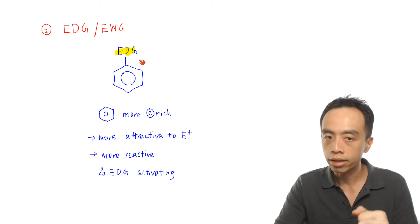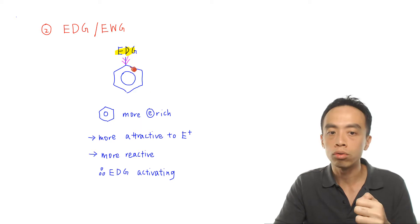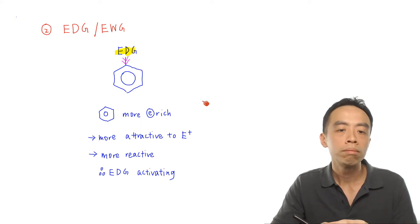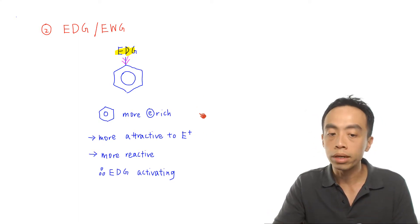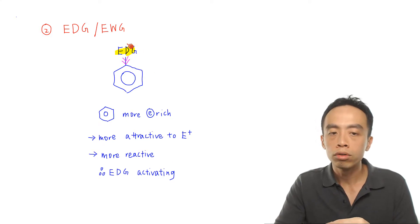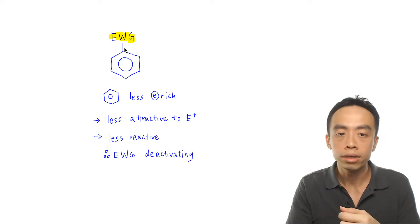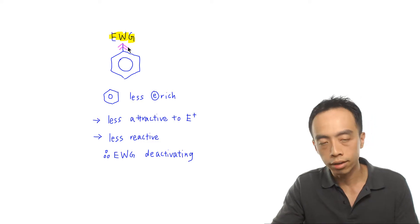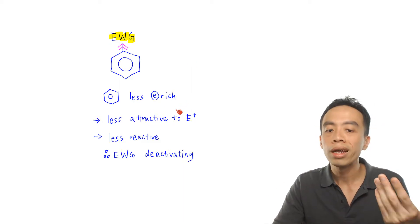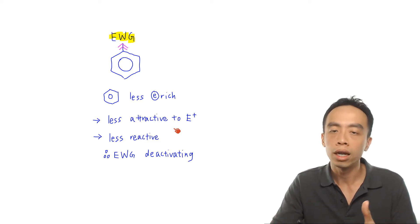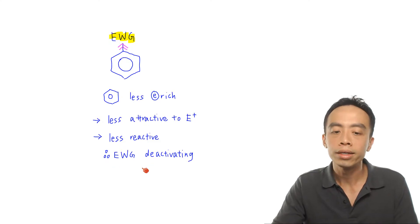If I have a donating group attached to benzene, the donating group will push electrons to benzene, making it more electron rich. This makes benzene more attractive to the electrophile, which is positively charged. So we say that an electron donating group is an activating group for benzene. On the other hand, an electron withdrawing group pulls electrons away from benzene. Benzene then has fewer electrons, is less electron rich, less attractive to the electrophile, and therefore less reactive. So an electron withdrawing group is deactivating to benzene.